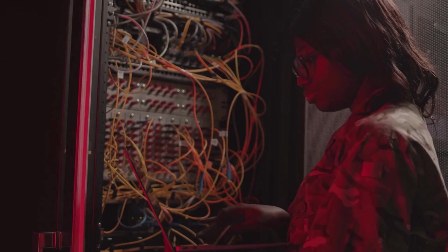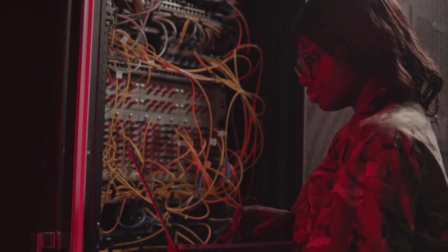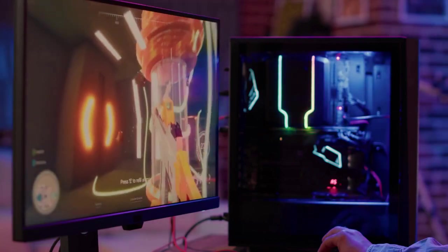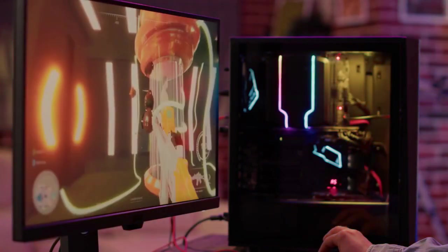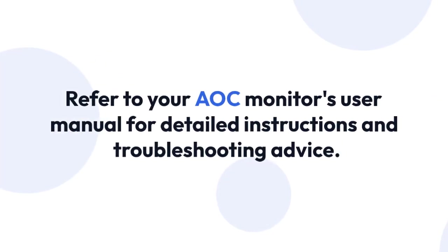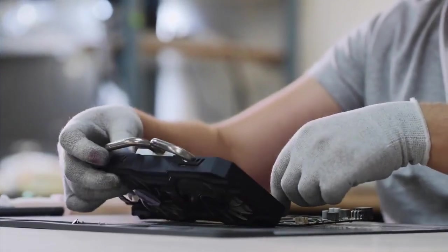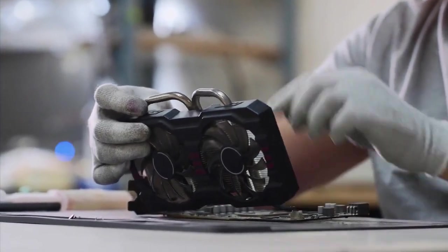Troubleshooting. If you're having trouble changing the brightness, double-check that your monitor's power cable is securely connected and that you've correctly connected the video cable to both your computer and monitor. Refer to your AOC monitor's user manual for detailed instructions and troubleshooting advice. Also, check for any driver updates for your graphics card, which may resolve any software-related issues.